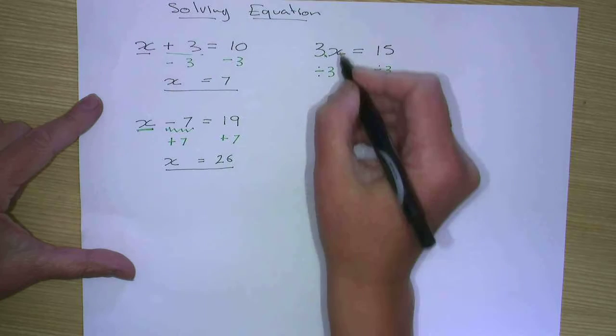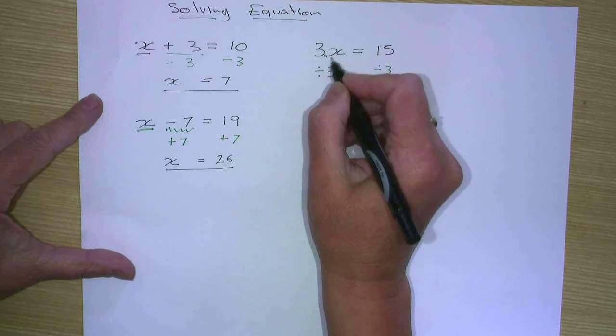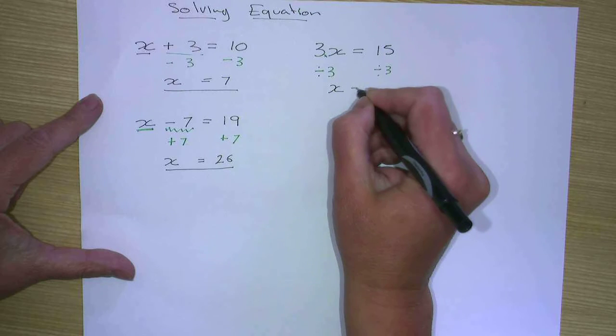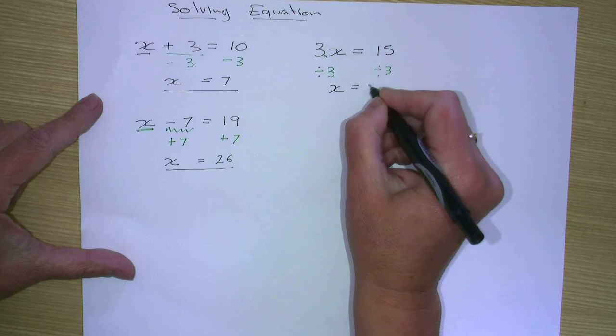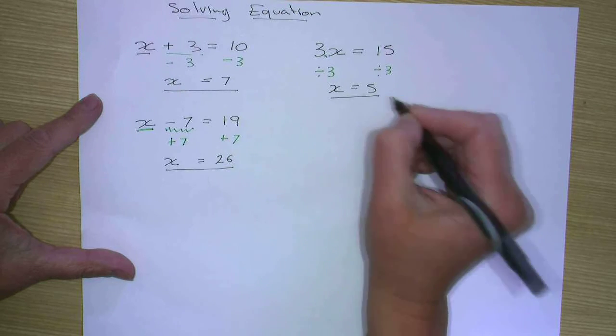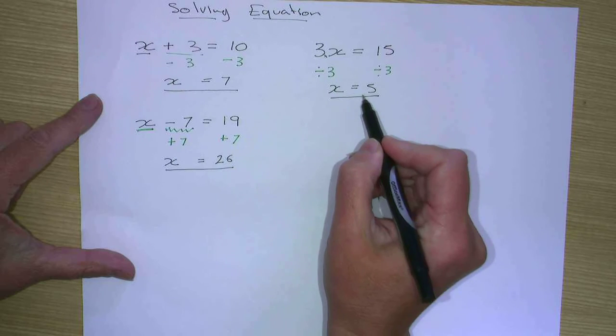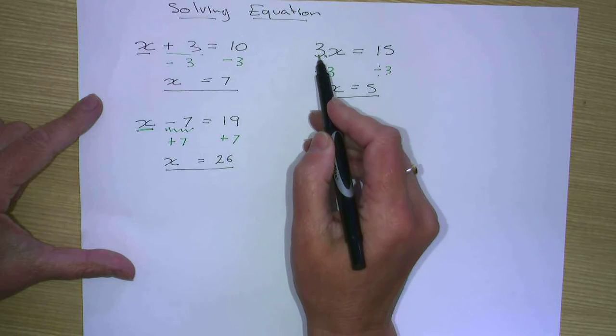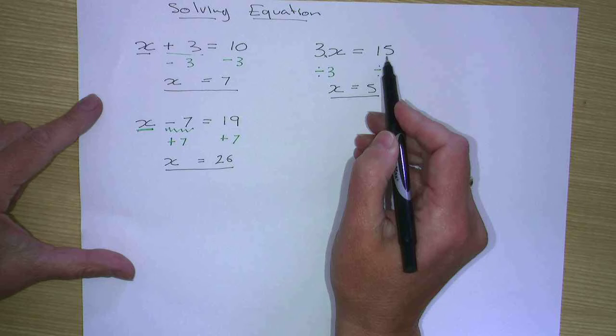So we're left with 3 divided by 3, which is 1. So we're left with the x. And 15 divided by 3 is 5. Let's check our equation and substitute 5 into here. 3 times 5 equals 15. True.